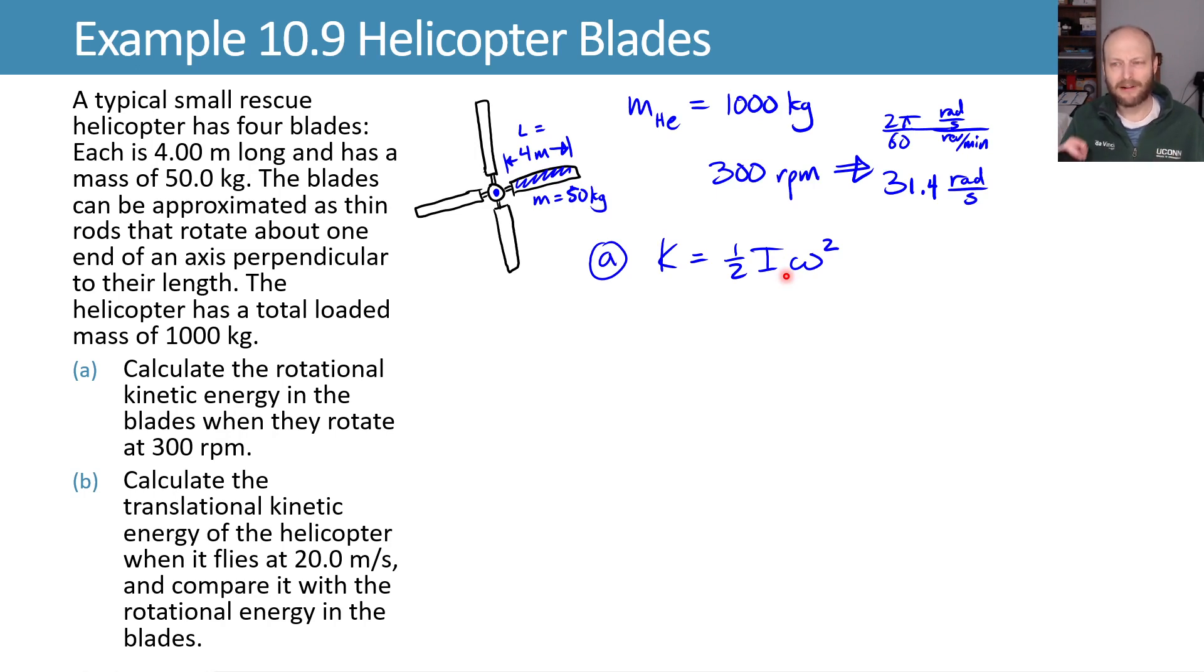So I can either integrate to find that, or I can look it up in a table. I'm going to choose looking it up in a table. And when we look this up, it's a thin rod, but it's about the endpoint. And that means that the moment of inertia ends up being one third ml squared. Again, where'd that come from? A table. I looked it up.